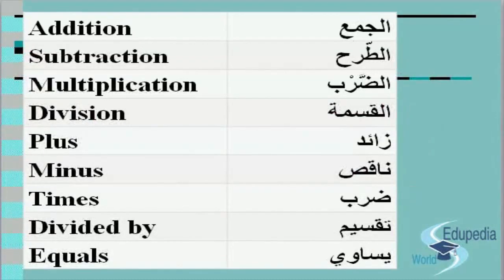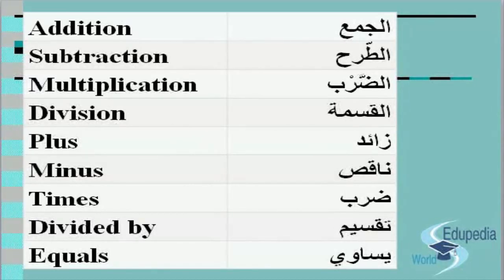First, let's learn how to say the basic operations and signs in Arabic. Addition is الجمع. Subtraction is الطرح. Multiplication is الضرب. Division is القسمة.